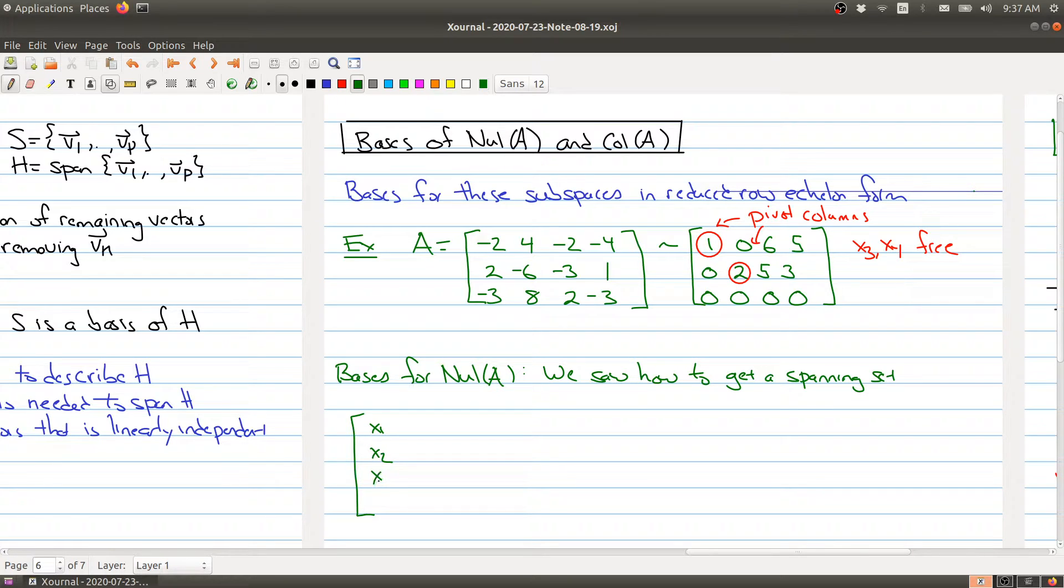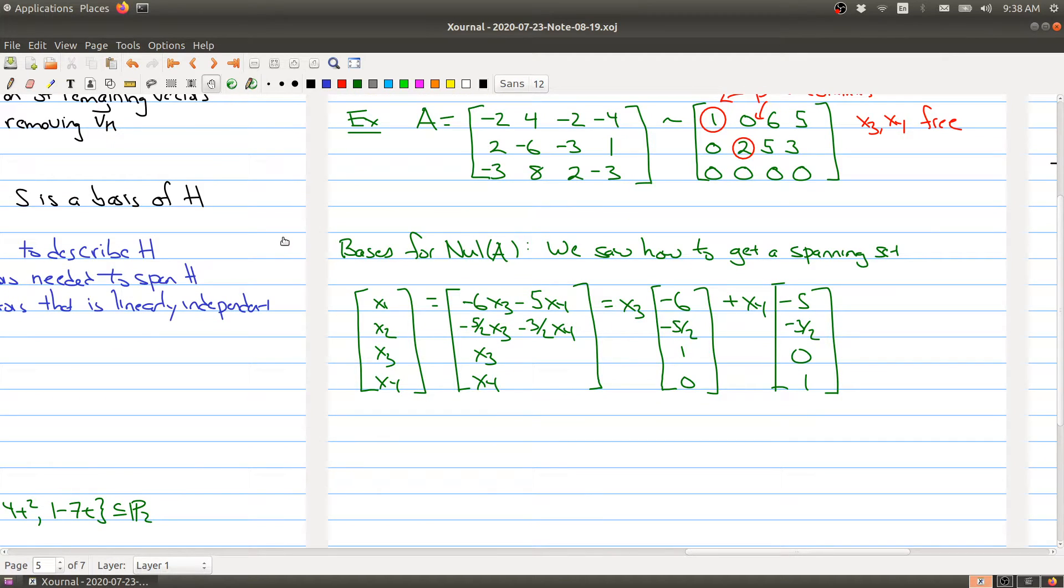We have x1, x2, x3, x4. Rewriting everything in terms of free variables, we have minus 5 half x3, minus 3 half x4 for x1. Here we have minus 6 x3, minus 5 x4 for x2. And we're going to break it up as the things involving x3, which is minus 6 minus 5 halves, 1 and 0. And then with x4, we have minus 5 minus 3 half, 0, 1.